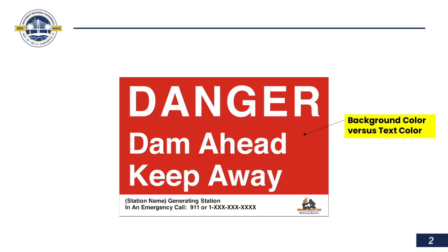In these next five slides, we're going to look at the key elements that make a sign effective. We're going to start with the color of the sign — the background color versus text color. You want your color to stand out. Typically it's going to be red for a danger sign or yellow for a warning sign, and your text color wants to stand out against that background. So if you have a red sign, you want white lettering; if you have a yellow sign, you want black lettering.